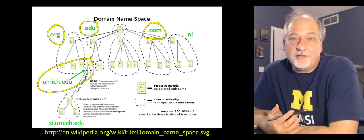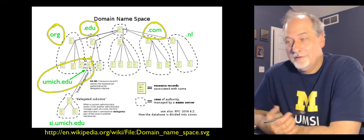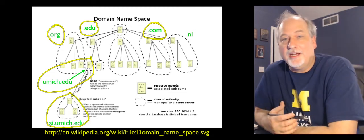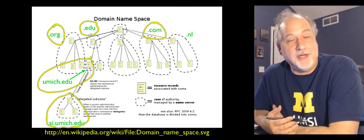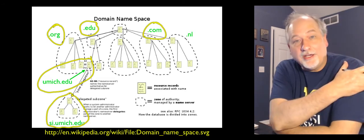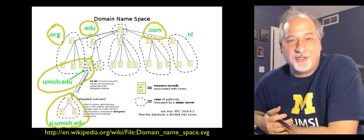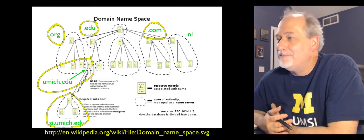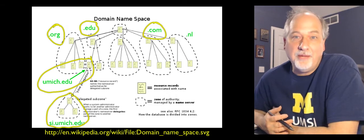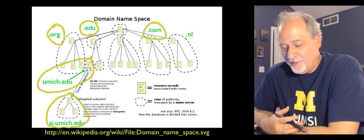I could go to that committee and say, hey, I want to be drchuck.umich.edu. And they would say, no, you can't. So then the School of Information, where I teach, has si.umich.edu, and they have a committee. They can give out subdomains within that. I could go there and say, hey, can I have drchuck.si.umich.edu? And they would say, no, but you can have csev.people.si.umich.edu. Once you own one of these things, you can give out subdomains.